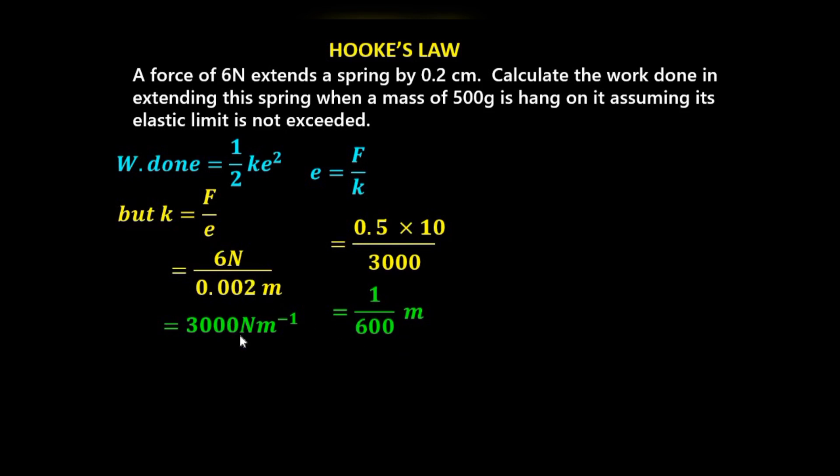Now given that we now know the spring constant and we also know the extension, we can now apply this formula here for work done. So we say work done is a half times the spring constant 3000 times the square of the extension 1 over 600. And that should give us 0.004167 joules.